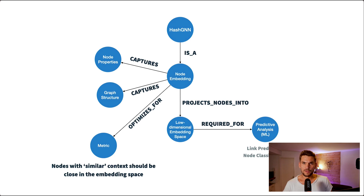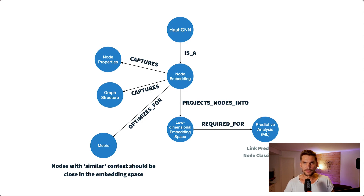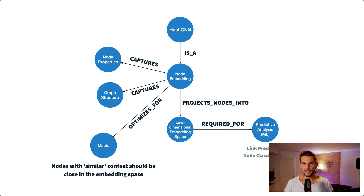Every node embedding algorithm has to define two major steps. The first is how we sample the context of nodes — in node2vec this would be deep or random walks, and in FastRP this would be a k-step transition matrix. The second major step is to define a way to reduce the dimensionality without losing pairwise distances. In node2vec we do this using SGD, and in FastRP we use random projections.